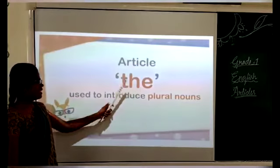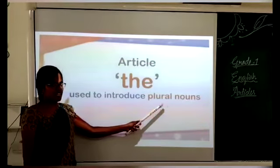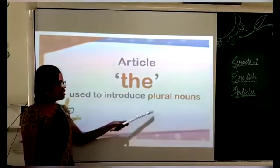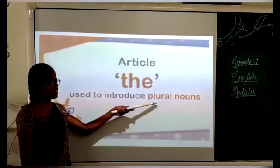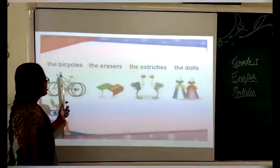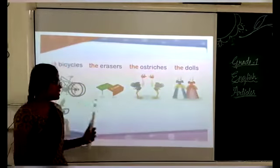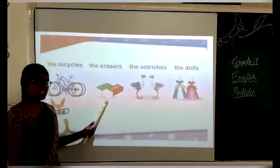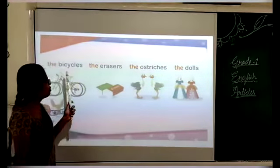The article THE is used to introduce plural nouns. What is plural? If there are two or more — two elephants, two bicycles, three books — that comes under plural. Examples: the bicycles, the erasers, the ostriches, the dolls. How many bicycles? Two — so we use THE. How many erasers? Two — so we use THE. For plural forms, we use THE.